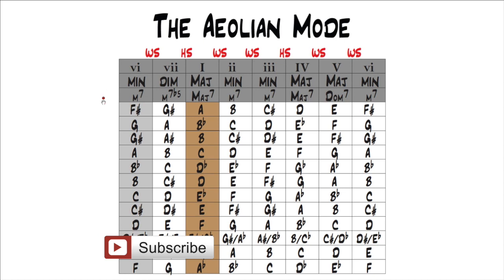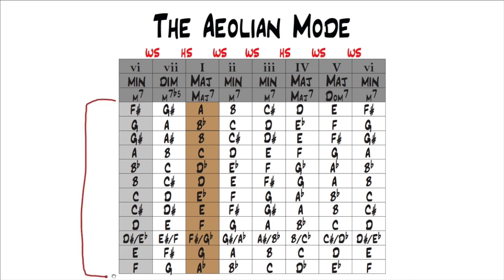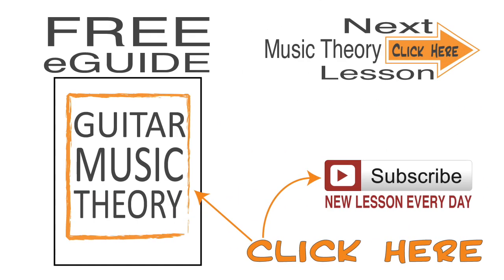We've taken this chart and made Aeolian the root, showing all the keys of Aeolian. G Aeolian is G, A, B flat, C, D, E flat, F, with a parent major scale of B flat. The interval formula is: whole step, half step, whole step, whole step, half step, whole step, whole step. That's the sixth mode of the major scale — the Aeolian mode. Go ahead and move on to the next lesson where we'll look at the seventh and final mode of the major scale, the Locrian mode. Download the eGuide — all these diagrams are in there — and be sure to subscribe because we have at least one new lesson every day.